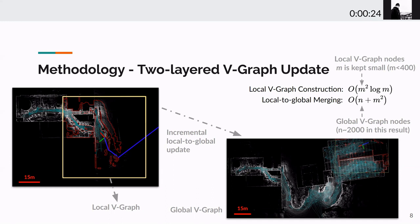In our experiment, m is always less than 400. When we merge the local graph with the global layer, the graph update takes computation at a complexity of n plus m square. The global visibility graph, like in the figure on the right, has about 2,000 nodes. Also, when the global visibility graph gets updated, the dynamic obstacles from the old data get removed.